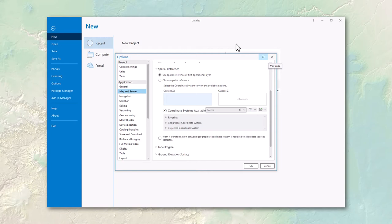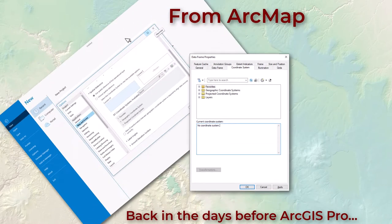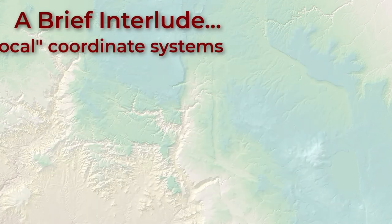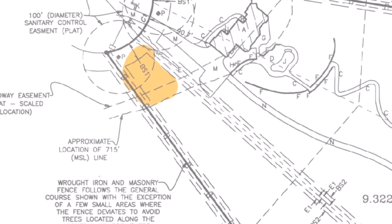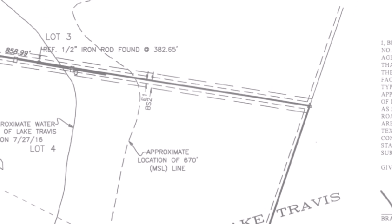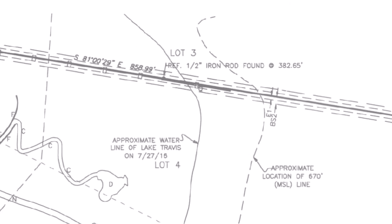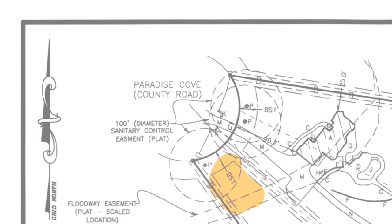In older versions of ArcMap, you could leave the coordinate system as a generic planar Cartesian system — usually called 'unknown' or 'no coordinate system.' This was useful for local coordinate systems that aren't anchored to the planet in any way, common in engineering projects. For example, you might pound a stake in the ground as a zero point and then measure everything relative to that — 10 meters north for a wall, 20 meters north for a door — with no connection to any latitude-longitude system.